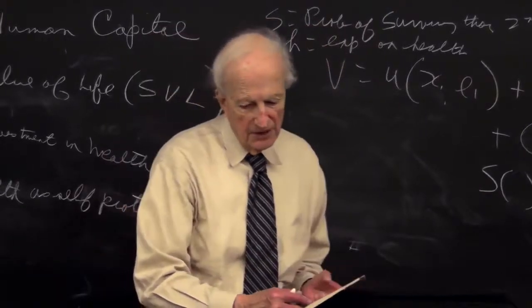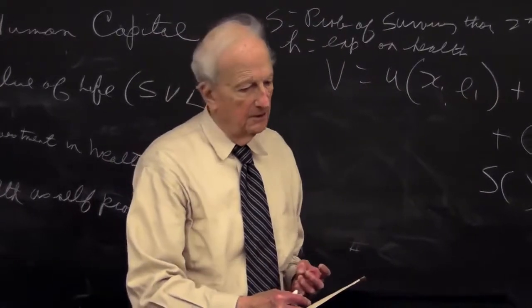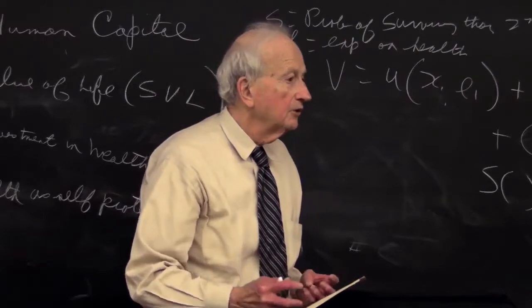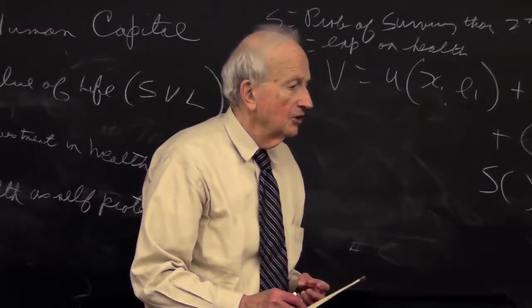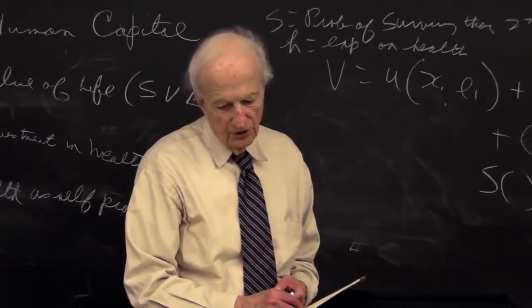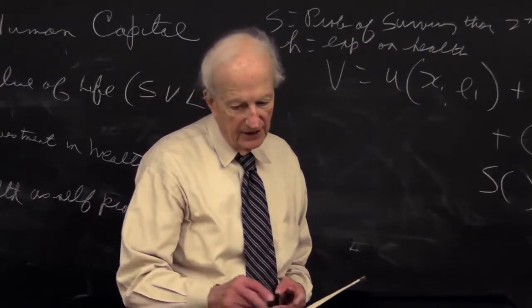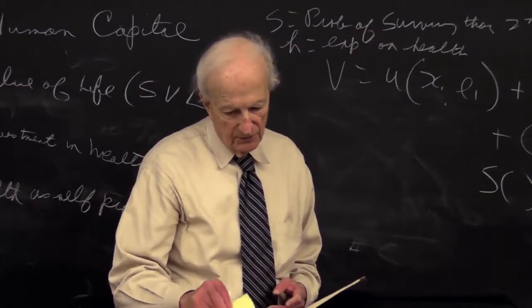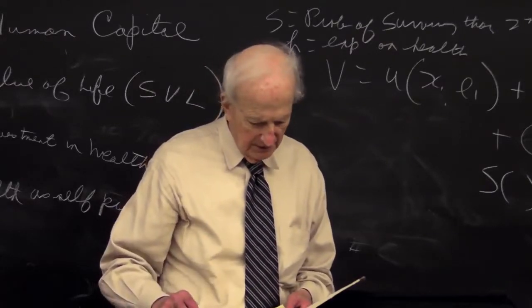Now the budget constraint is going to be like what we did before. I'm going to assume full annuity insurance, so expected consumption, including the expenditure on health, is going to be equal to your expected income.